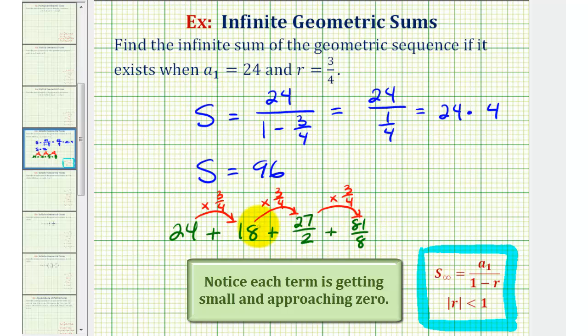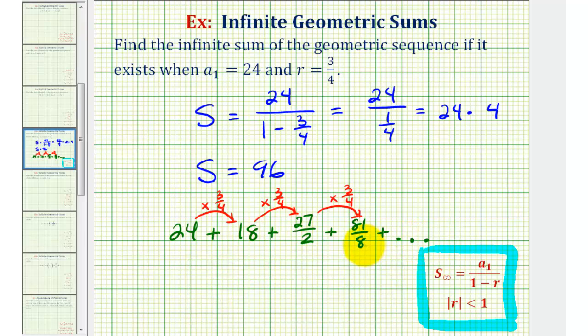And again, this is an infinite series, so it goes on forever. And the sum of this infinite geometric series would be 96.